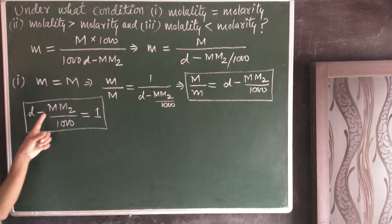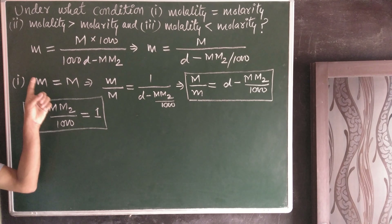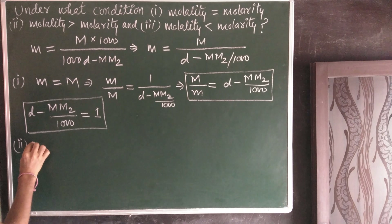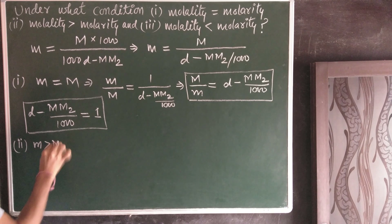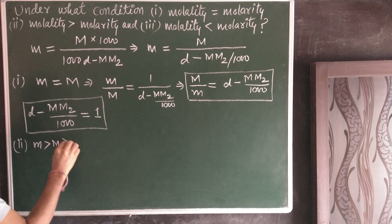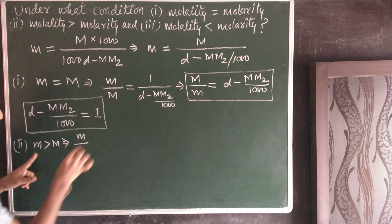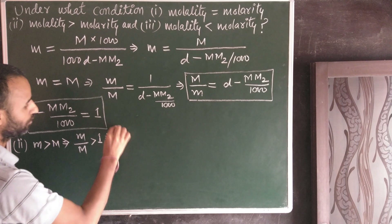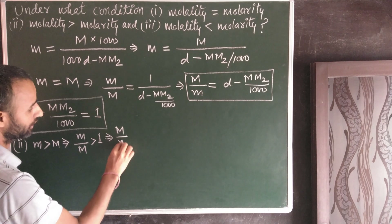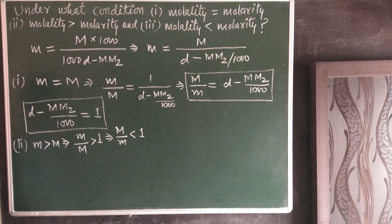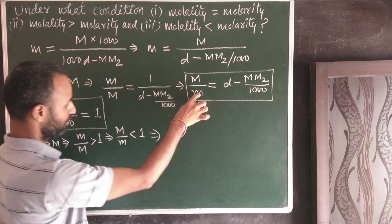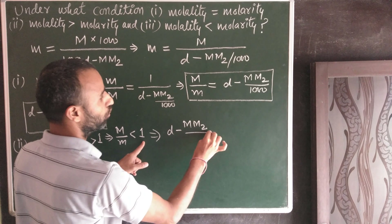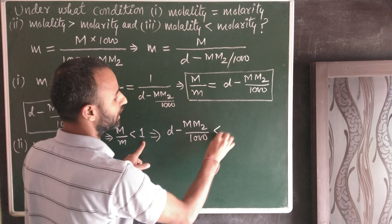Second case: when molality is greater than molarity. That implies molarity over molality is less than 1, so capital M over small m is less than 1. Therefore, (D − M·M₂/1000) is less than 1.